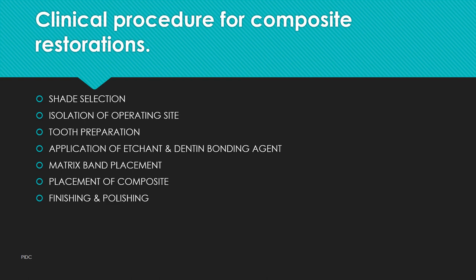The clinical procedure for composite restoration involves: shade selection, isolation of the operating site, tooth preparation, application of etchant, dentin bonding agent, matrix placement, placement and build-up of composite, and finally finishing and polishing.